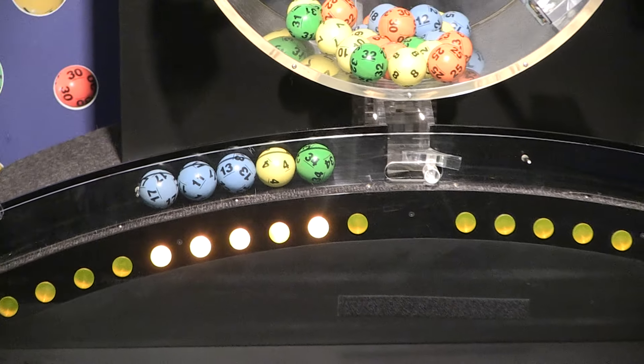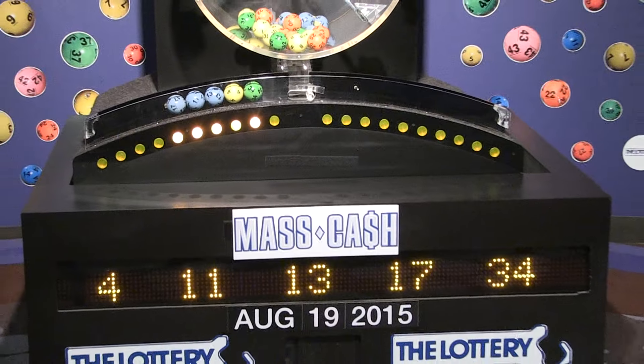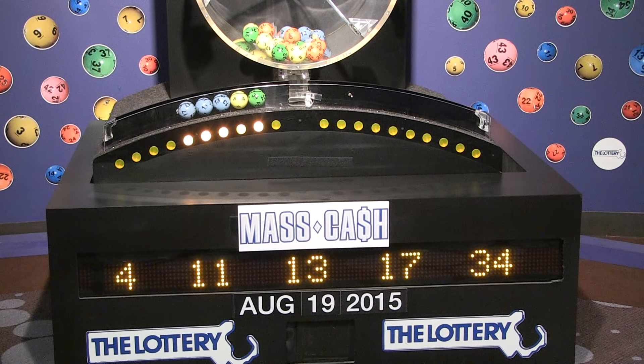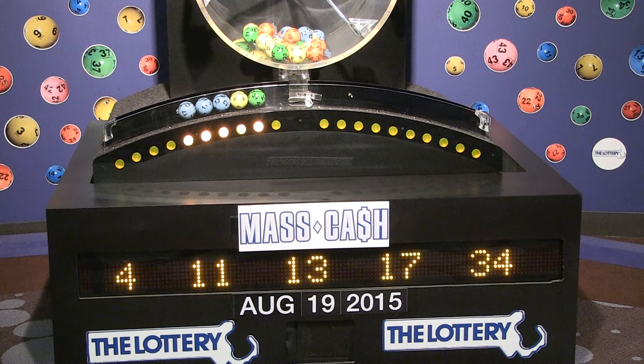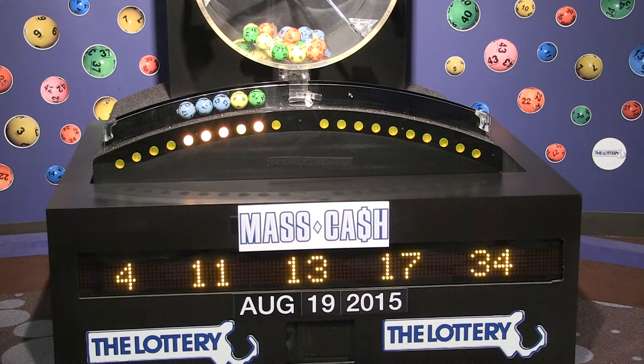Once again, the winning Mass Cash numbers for Wednesday, August 19, are 4, 11, 13, 17 and 34. We'll see you shortly for the Megabucks Doubler and Powerball Drawings.